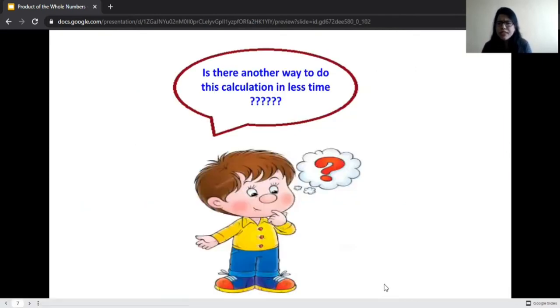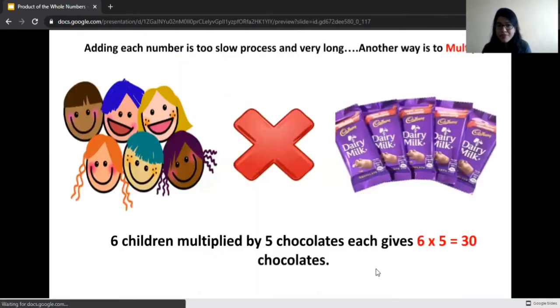But don't you think this is a little bit lengthy and time-consuming process, adding a particular number again and again repetitively? Is there any easier way or the fastest way to do this calculation? There is. Adding each number repetitively is very slow and long process. Another way is to multiply. This can be done very easily by multiplication. There are six children and if you multiply them with the five chocolates, then six fives gives us 30 chocolates. Wasn't that easy? And calculation done in very less time.